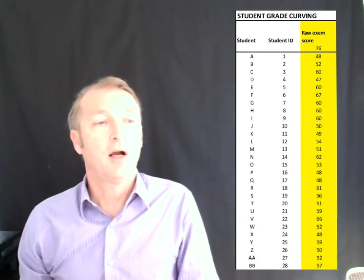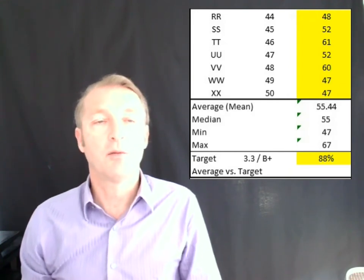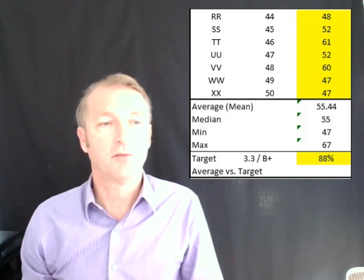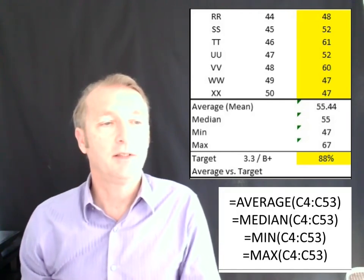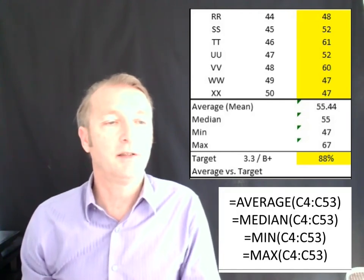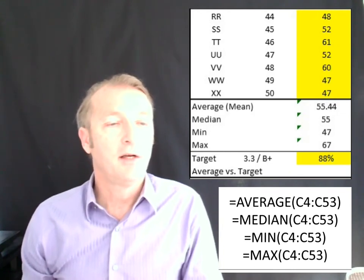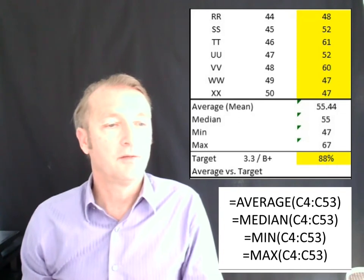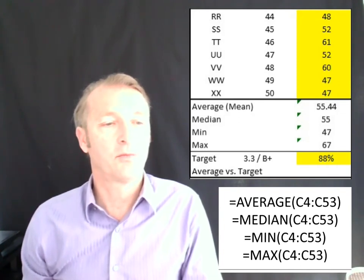The first thing I normally do is add average, median, minimum, and maximum so I can see the computation of each of the score calculations. In this case, you can see the average score in the exam was 55 points out of 75. The maximum score was 67 and the minimum was 47.